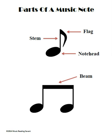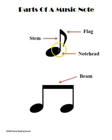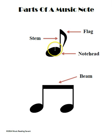So with a music note, in this very basic form, we have this area that is colored in right here and it looks like an oval shape. This is called the note head. Wherever this is placed on the music staff, either on a line or in a space, that tells us the actual name of that note. So the note head is a very, very important part of the actual music note. This is what we pay attention to the most.